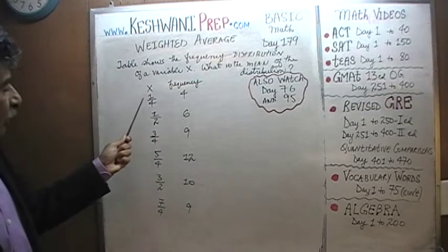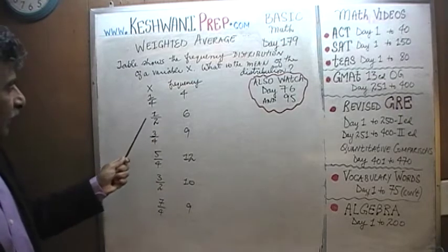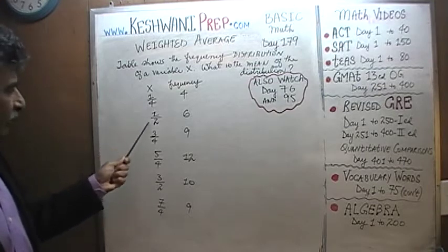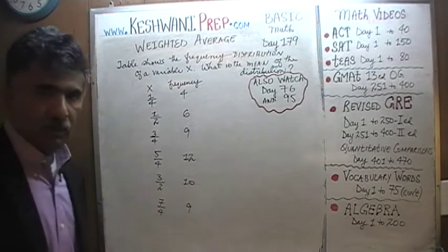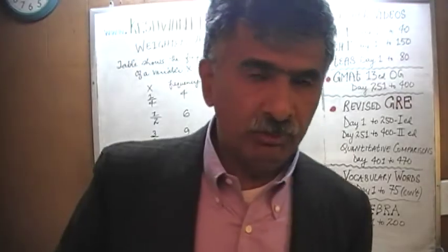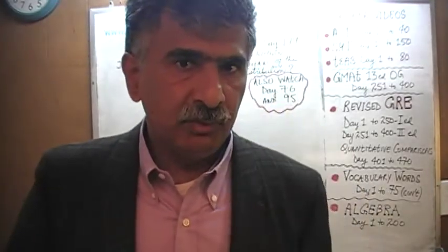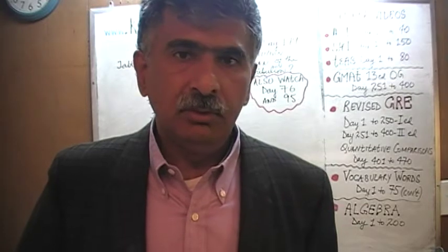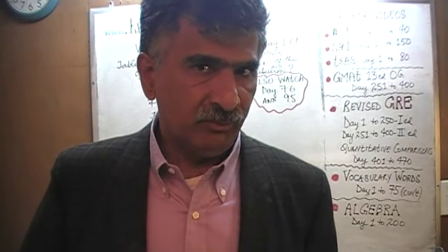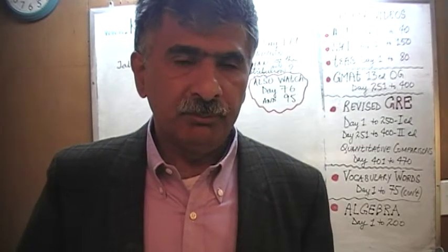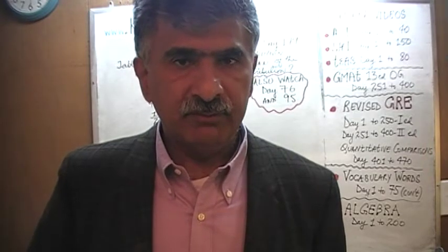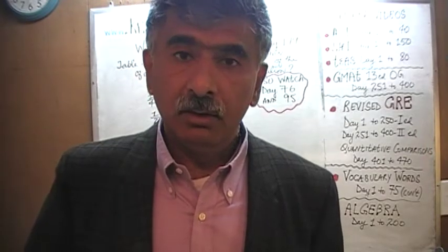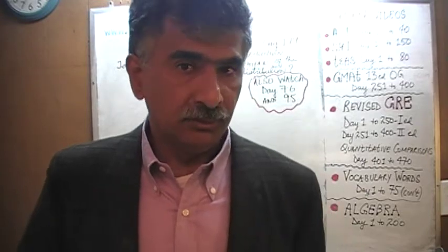These are the frequencies: one quarter appears four times, x takes the value of one half six times, three quarters nine times, and so on and so forth. I'm going to give you five seconds to pause and unpause the video — I insist that you do the problem yourself first, then compare your work against what we will do together.